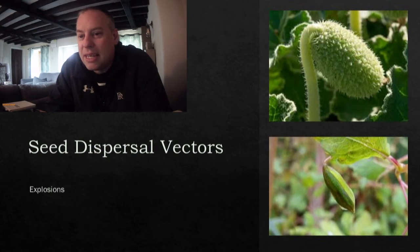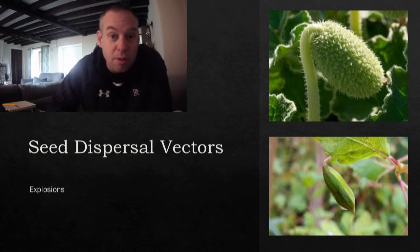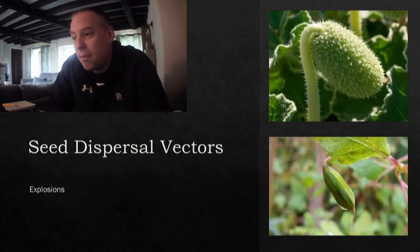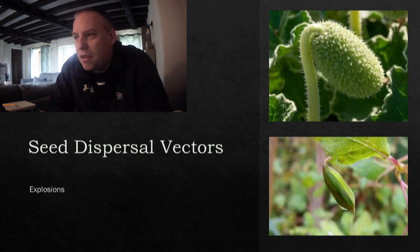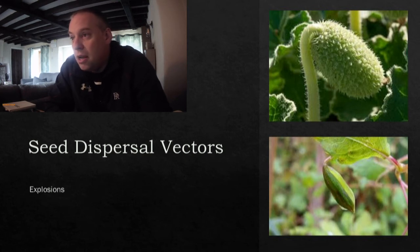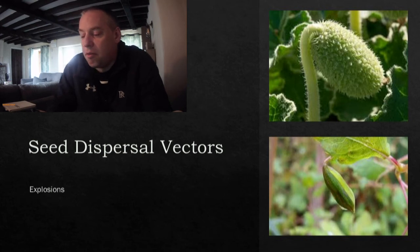There is also an explosion method of seed dispersal. Examples include the exploding cucumber and the exploding pea — both worth watching on YouTube. The plant builds up enough tension in the fruit so that eventually, when the pressure gets too much, they explode and the seeds go flying in different directions.